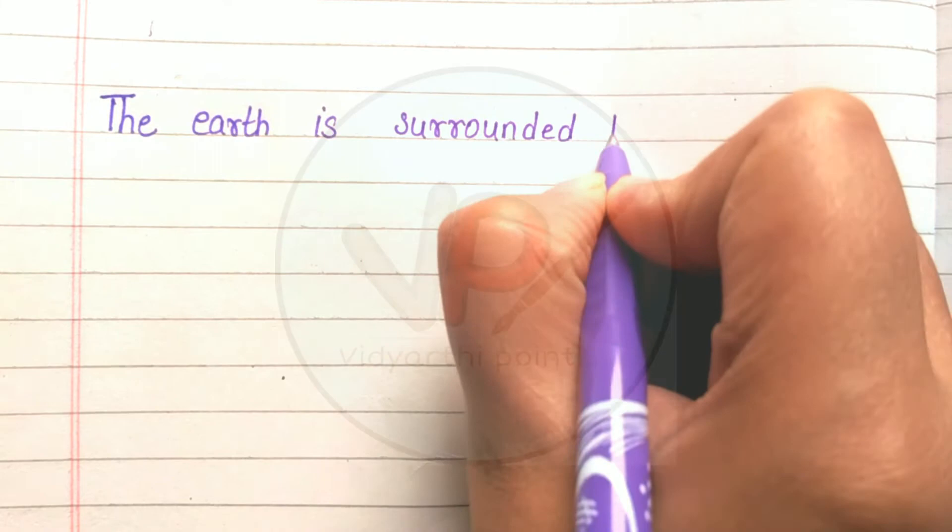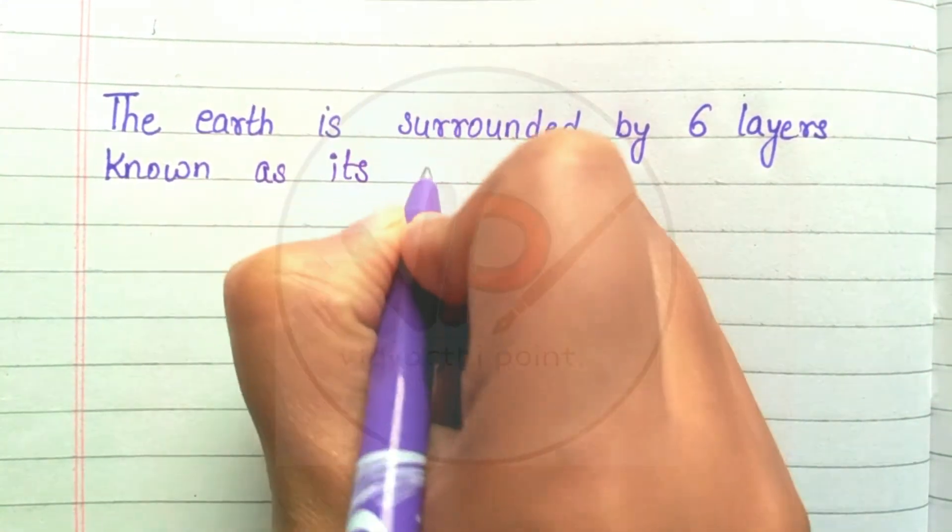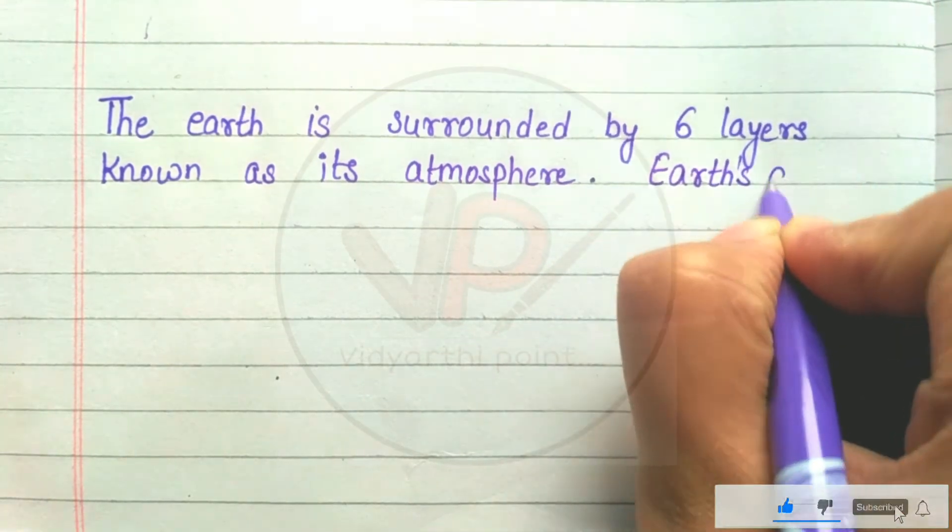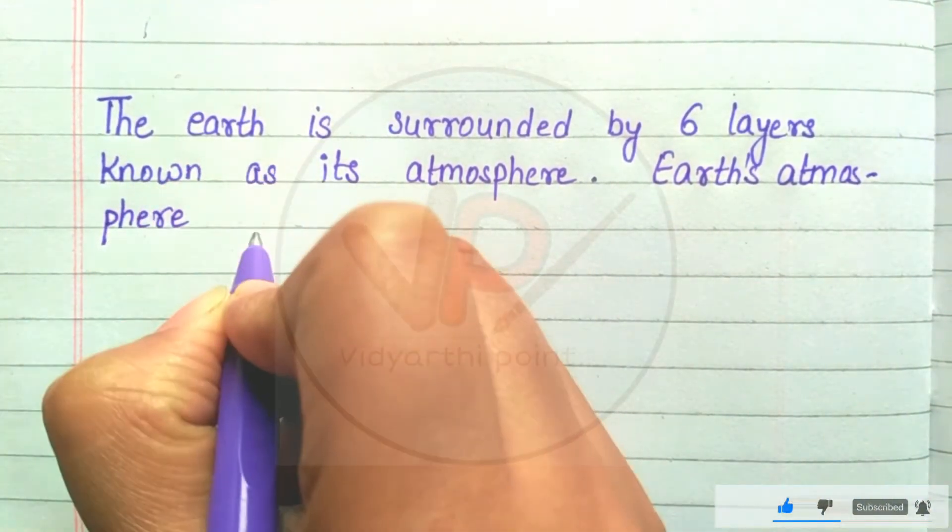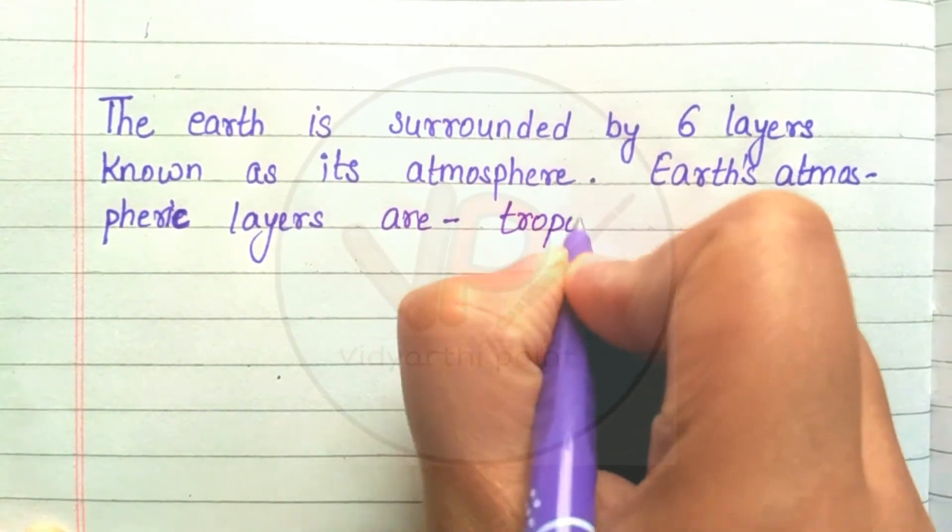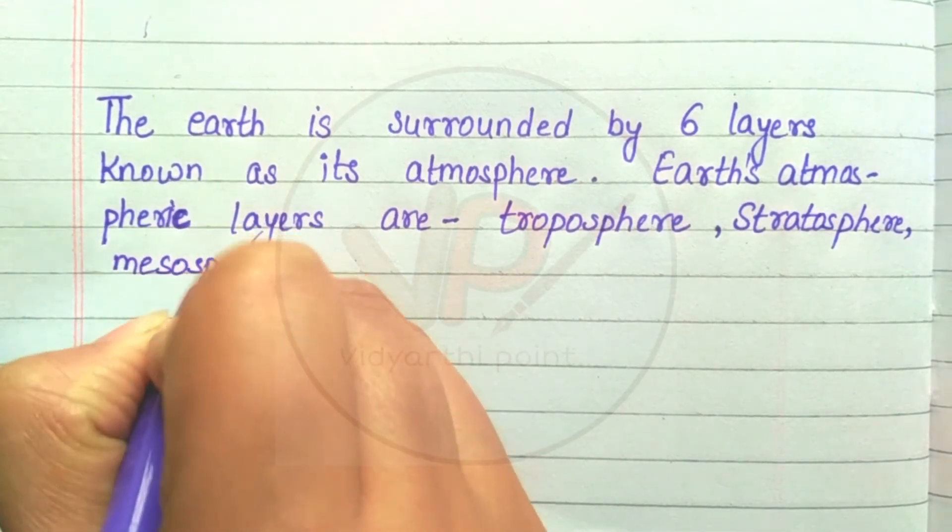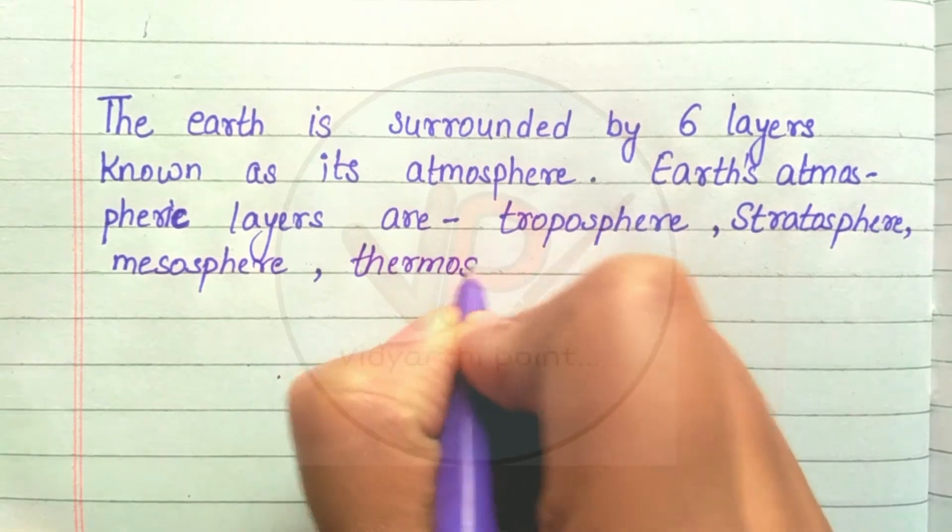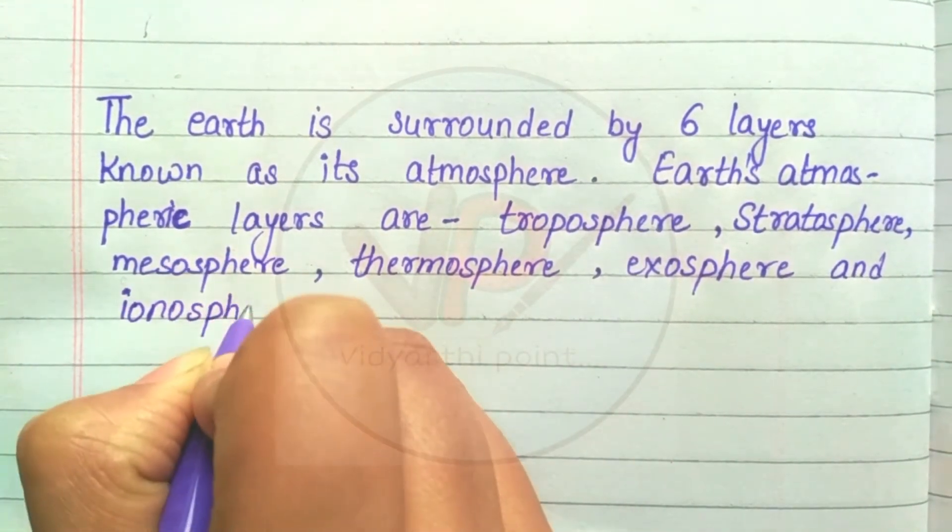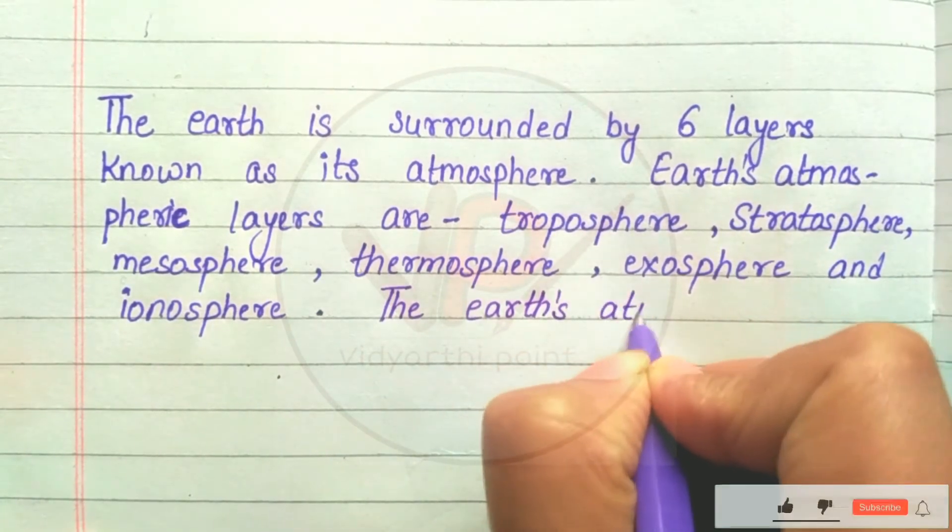The Earth is surrounded by six layers known as its atmosphere. Earth's atmospheric layers are troposphere, stratosphere, mesosphere, thermosphere, exosphere, and ionosphere.